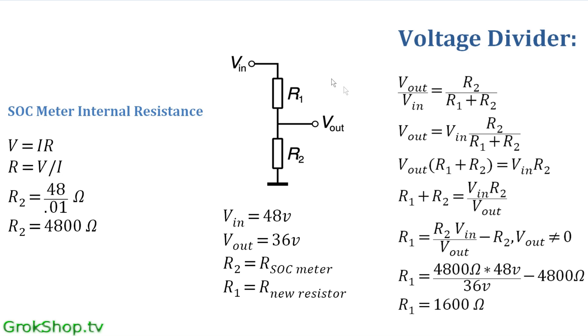So let's take a look at this circuit here. In relation to the state of charge meter, what we had to start with was 36 volts at V_out and then the resistance of the state of charge meter. And so this would be the circuit before the upgrade.